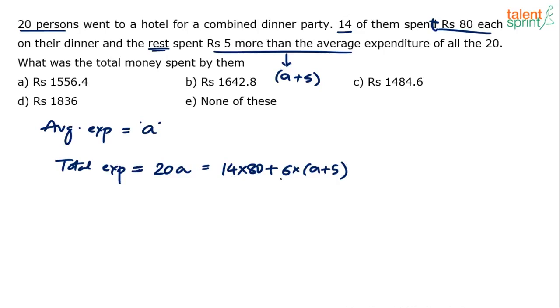Now what is he asking us to find out? What was the total money spent by them? Total money spent by them—average is a, total will be 20 into a. So basically 20 into a is equal to what? This is one equation, one equation and there's only one variable, a. So solve for a and then find out what is 20 into a.